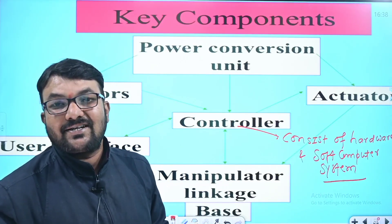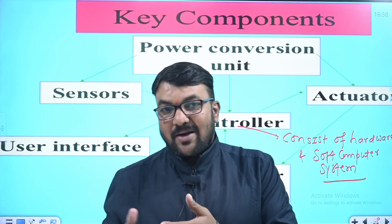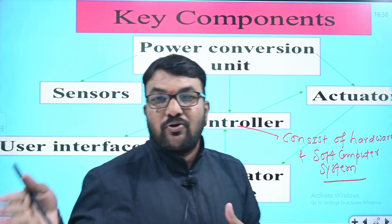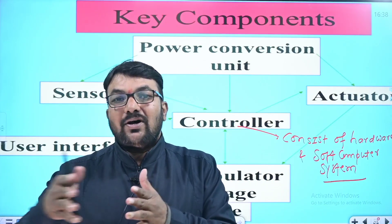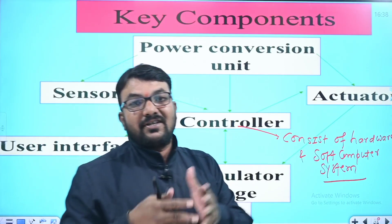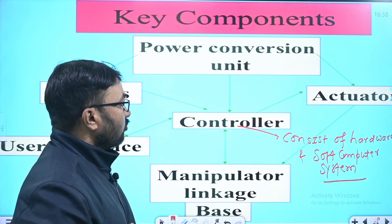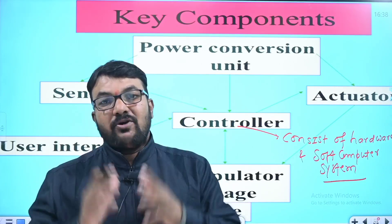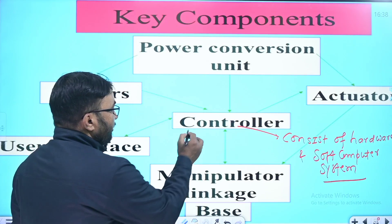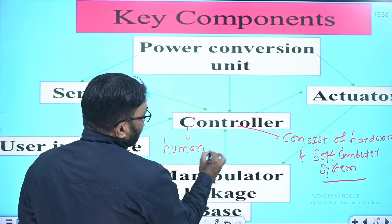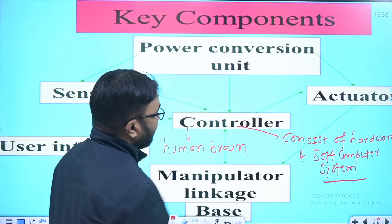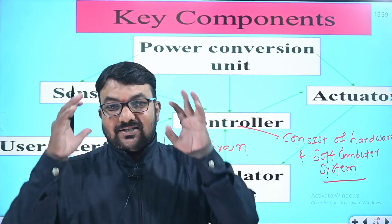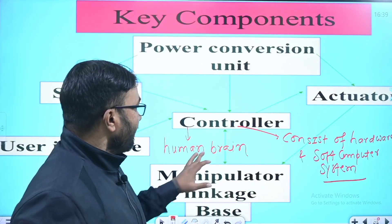The software is the program — robots are programmable machines configured for different jobs and work. The controller is analogous to the human brain. Just as the human brain controls all parts of the body, the controller controls all parts of the robotic system.